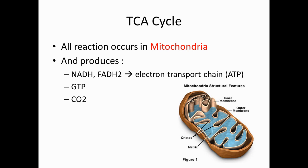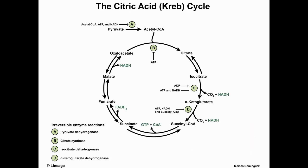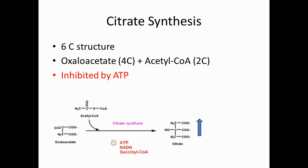The TCA cycle also produces GTP and carbon dioxide. Here is the figure of the citric acid cycle, in which acetyl-CoA enters the cycle and the end product is oxaloacetate. In this video we are going to talk about each and every step of this cycle.